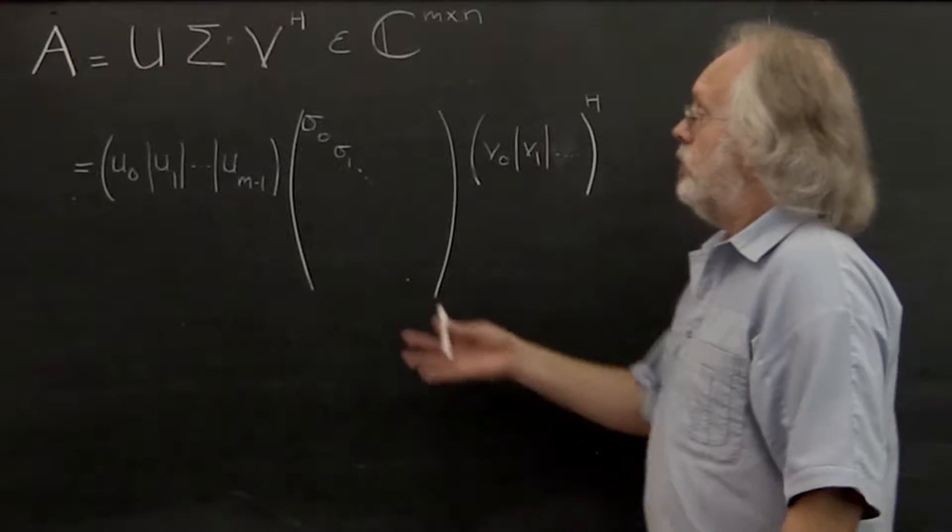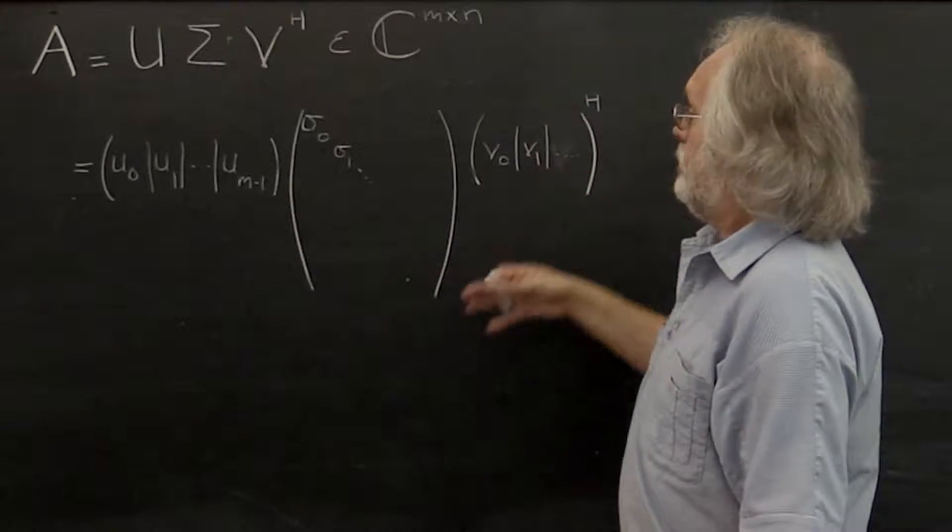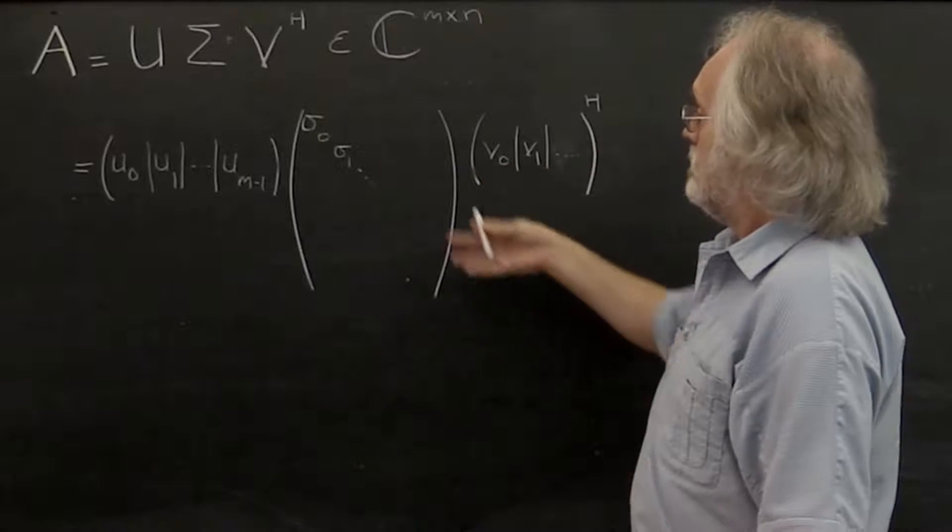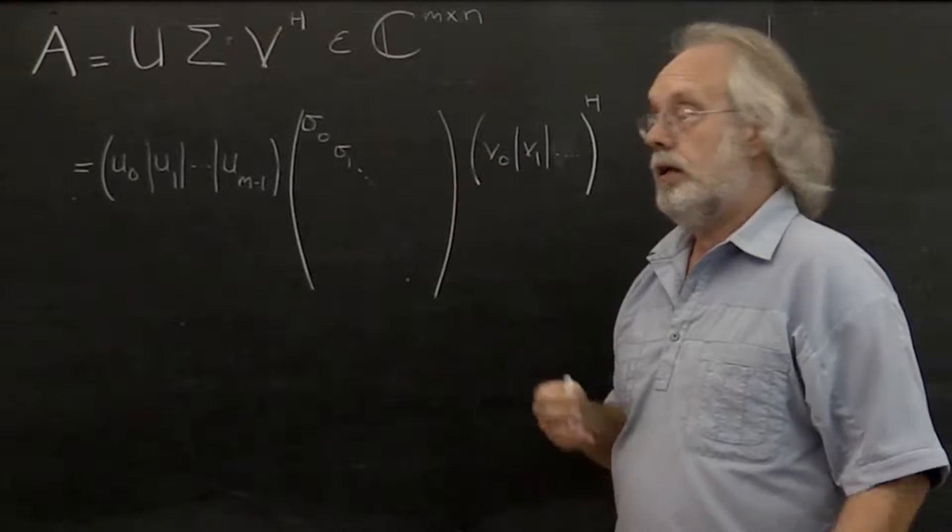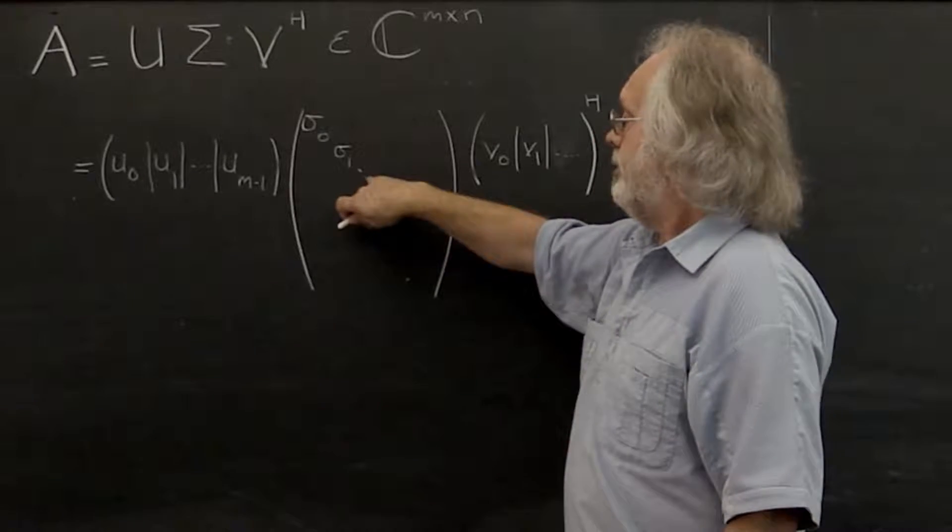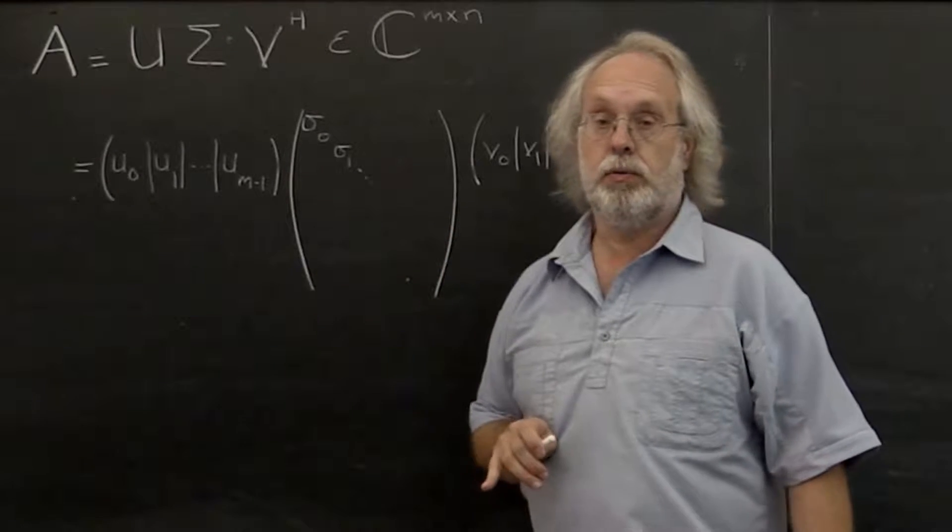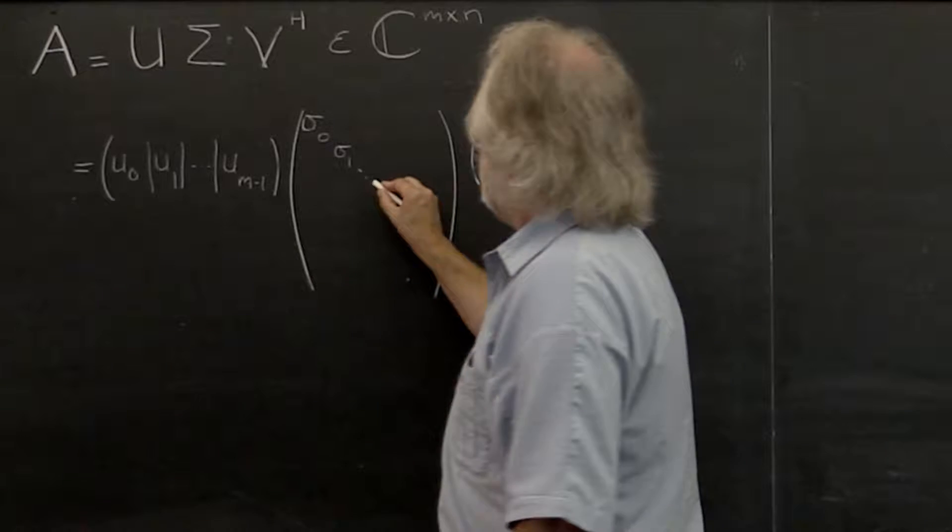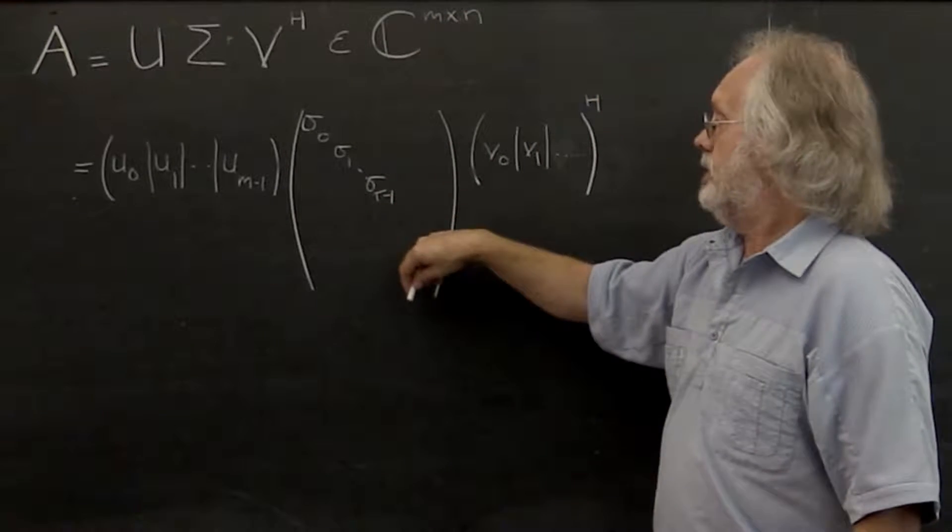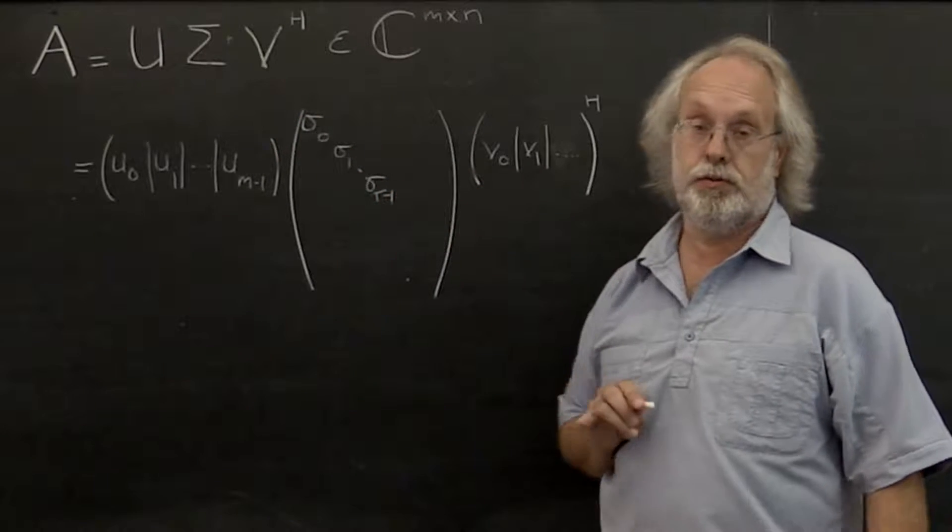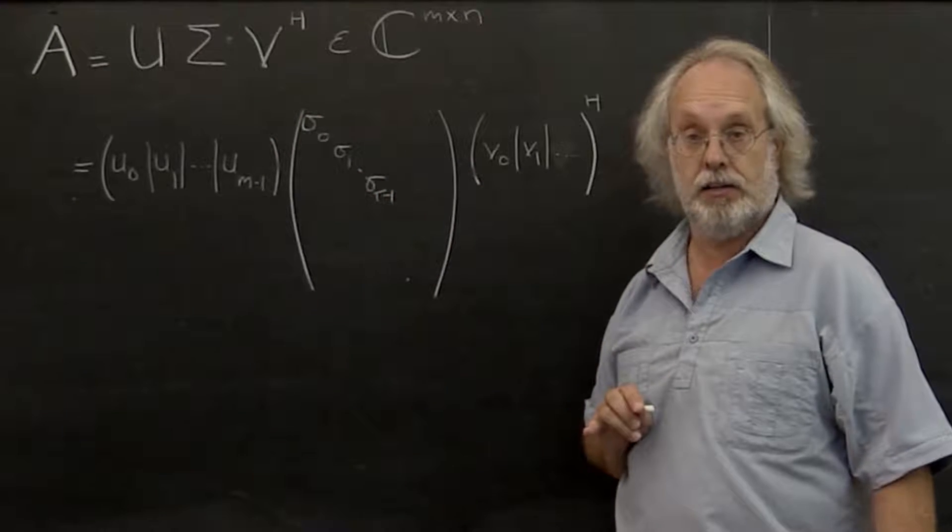You can express that in terms of the columns of U, the columns of V, and the diagonal elements of sigma. If a whole bunch of these diagonal elements are equal to zero, then the rank of the matrix is equal to the number of non-zero singular values on the diagonal.